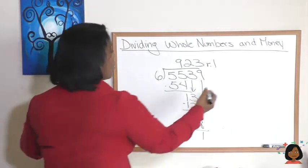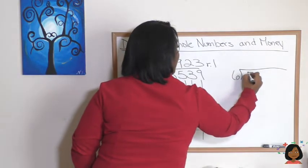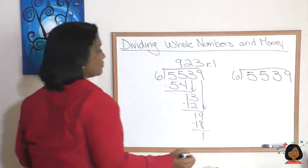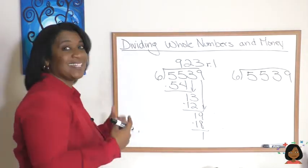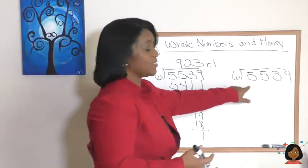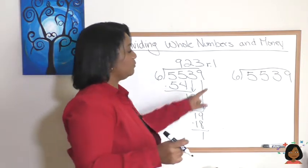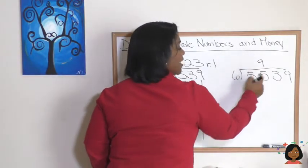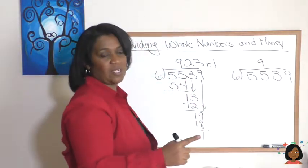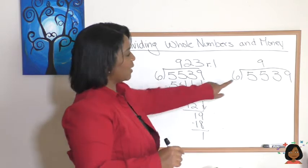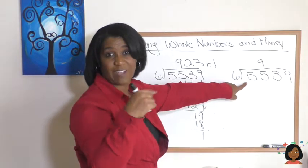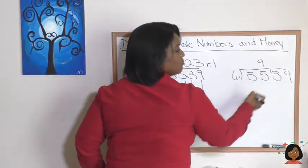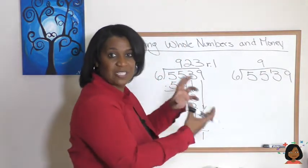Here we go. We're going to write the same problem over here to the side. 5, 5, 3, 9. I gave it a little space and you'll see why. Let's do the same process. Six does not go into 5. So we keep going. Six does go into 55. It goes in 9 times. So instead of writing 54 down here, I'm just going to do some math in my head. I'm going to say 55 minus 54 is 1. I've got 1 left over. So I'm going to take that 1 and put it right here next to my 3 and turn that 3 into a 13.